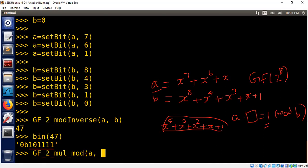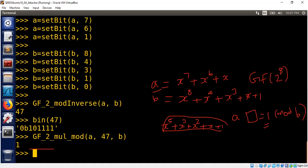So all I'm going to do is GF 2 multiply mod of A and 47 in B. So you should get 1 now. And we got 1.